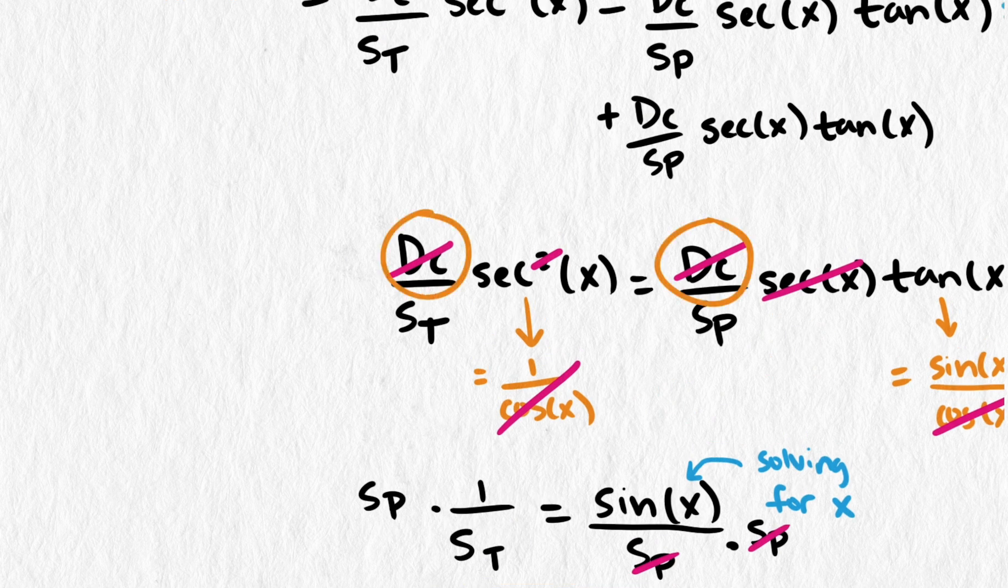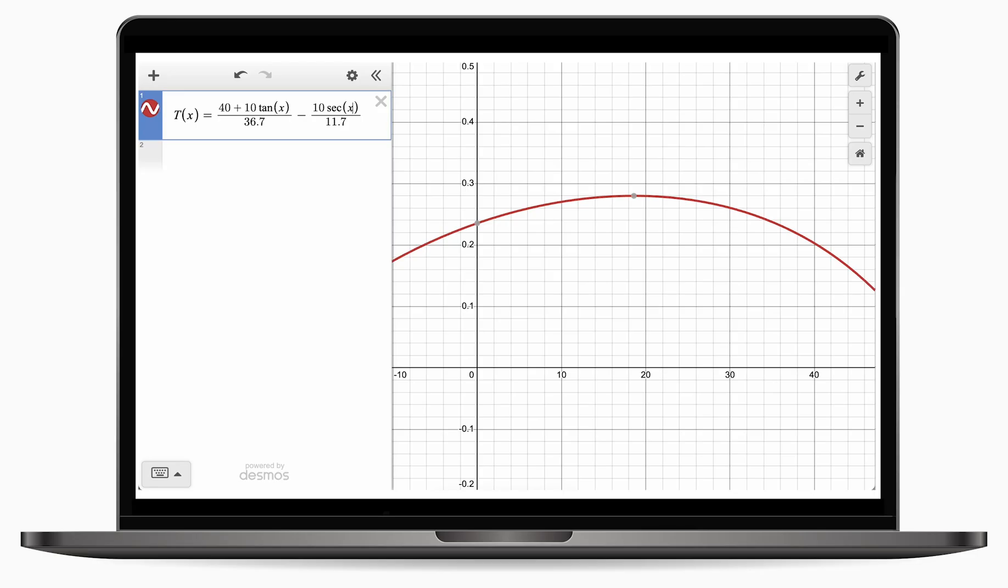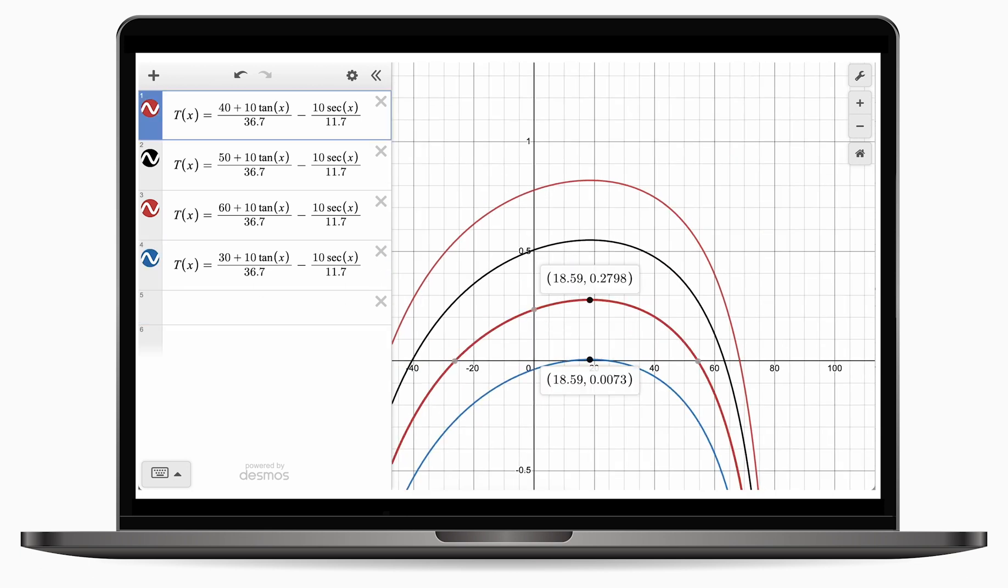As we solve, notice that the distance from the pedestrian to the curb divides out, so that parameter also doesn't affect the optimal angle. We learned this in the last video, but had to just try changing values in the function to see how that would affect the graph.